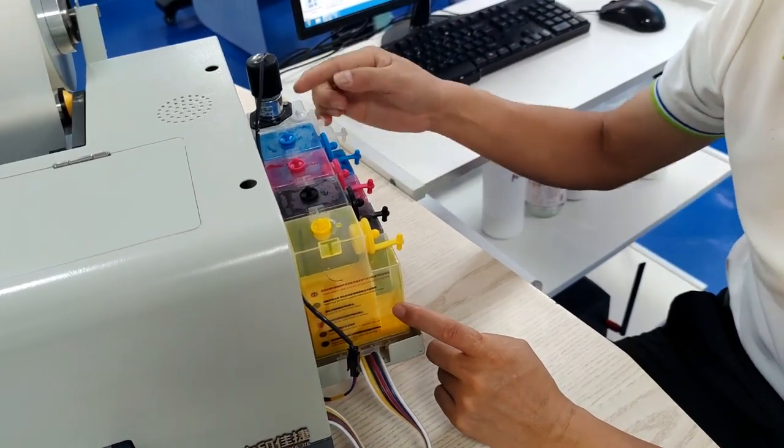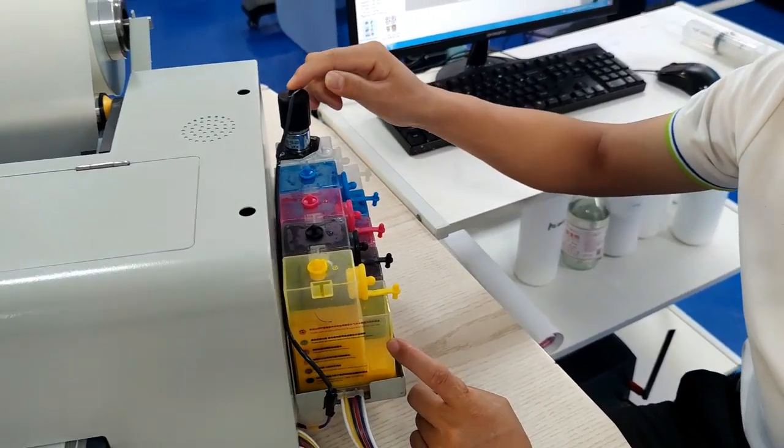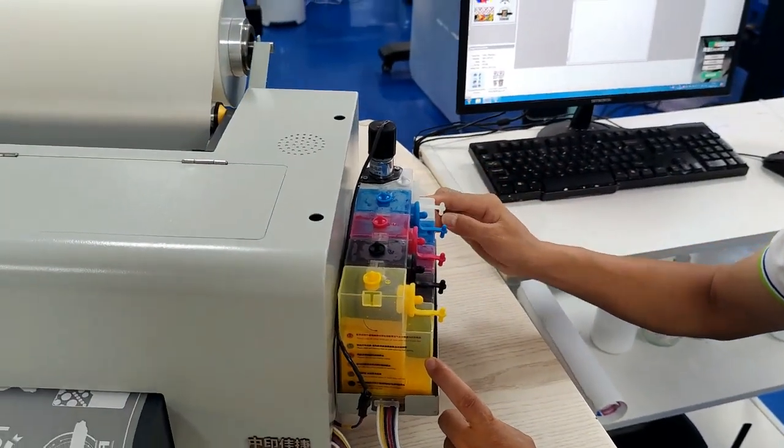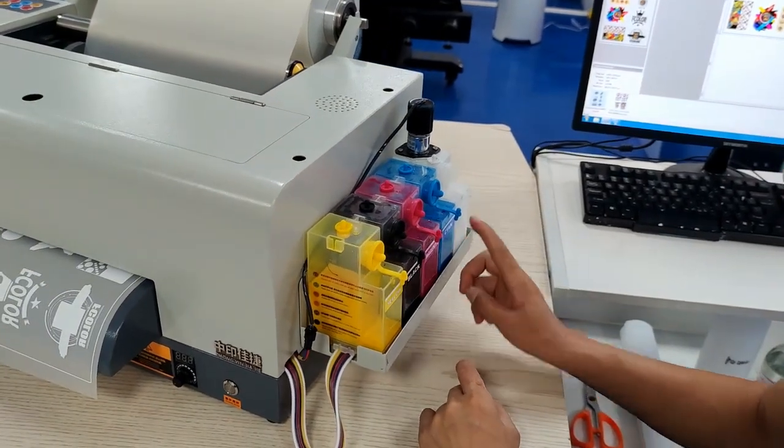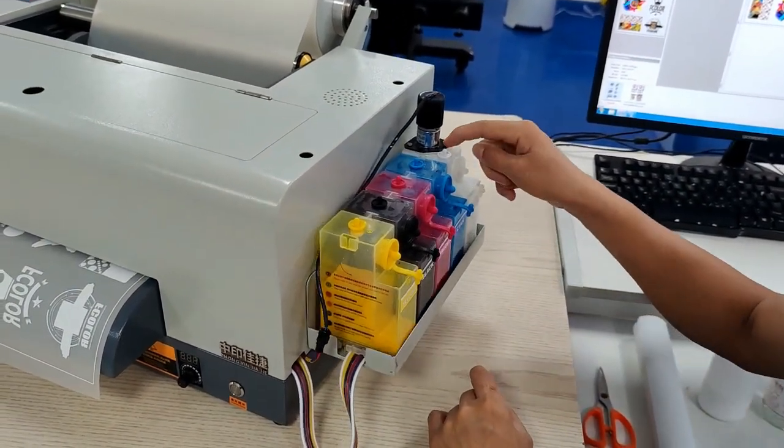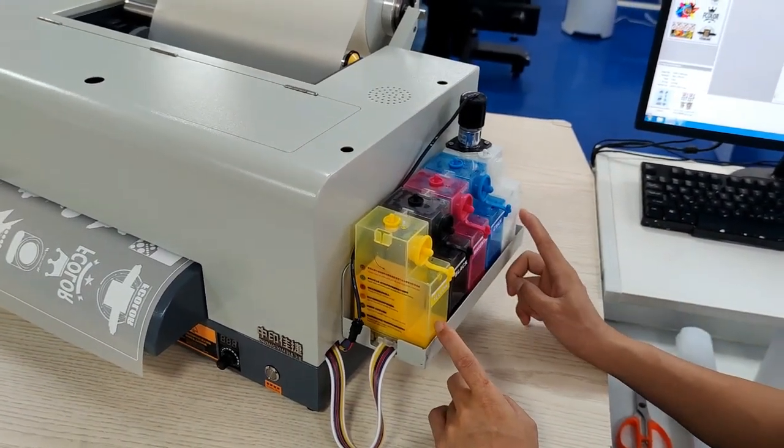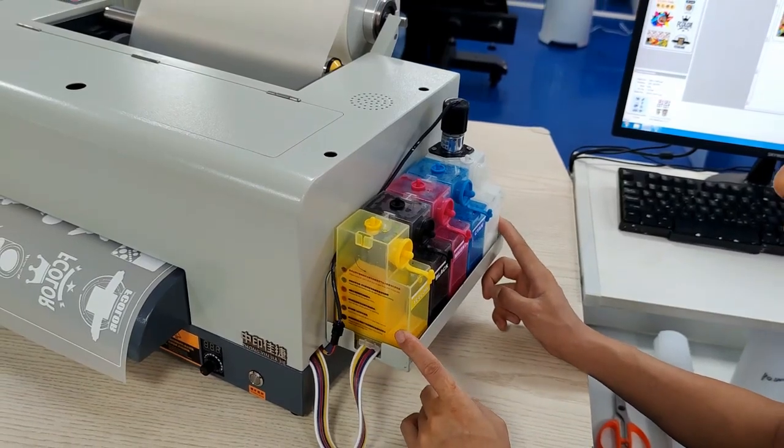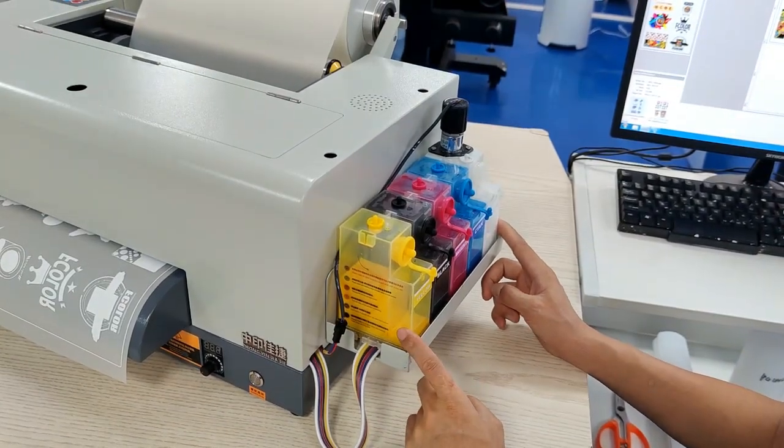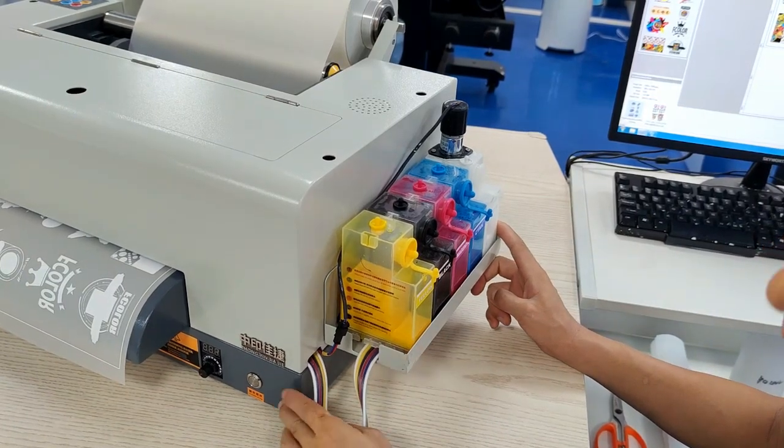For this special one, here is the measure model on top of the bottle that can keep the ink continuously running with the white colors. This will help the white color ink run better with the print head.